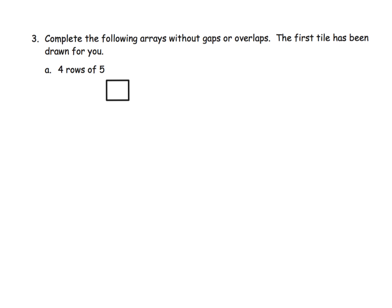I'm going to use my blue pen. We've been given one square, and we want five in this row, so I need there, there, there, and there. I'm trying to make everything the same size. Parents and teachers, don't freak out if your students' squares don't work out — hey, I'm a mathematician and my squares didn't work out, and that's perfectly fine. That's one row of five.